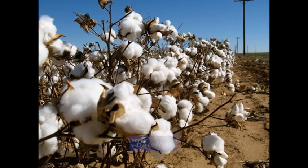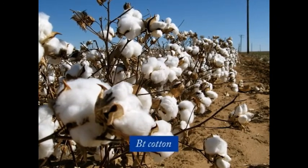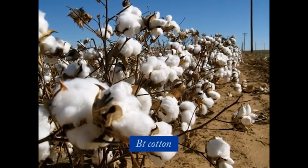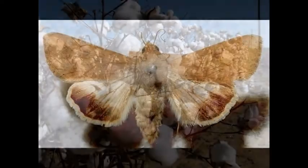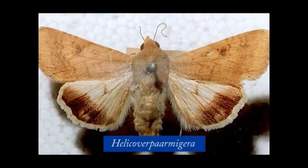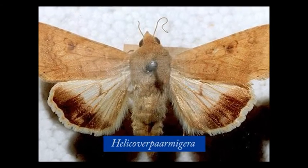The low level of Cry gene expression can be improved with the use of truncated genes containing only the N-terminal portion and a strong promoter. The commercially available BT cotton was developed with Cry1Ac protein from Bacillus thuringiensis and is resistant against the insect Helicoverpa armigera.